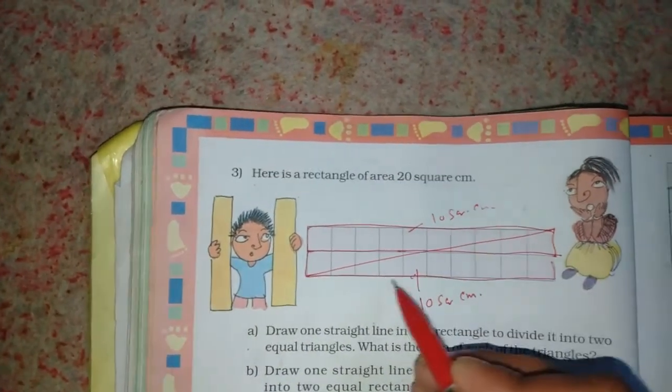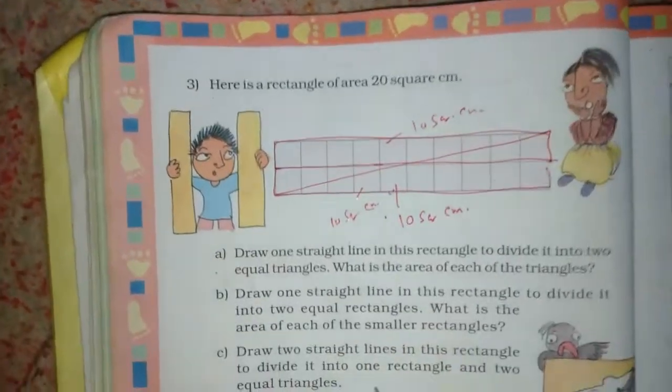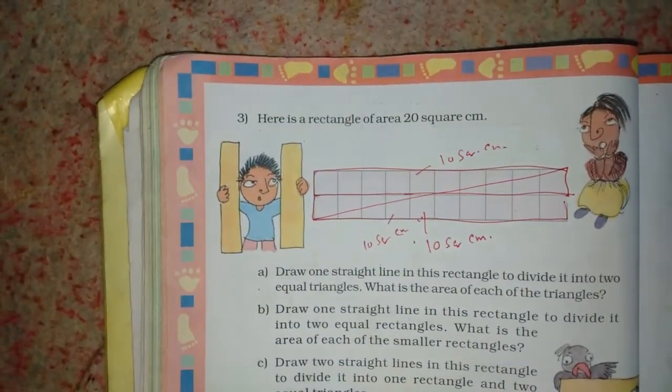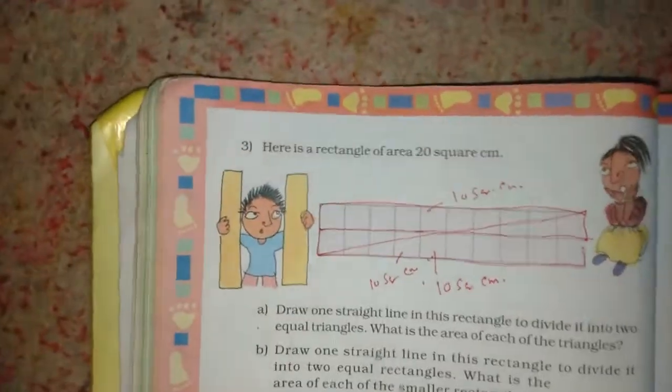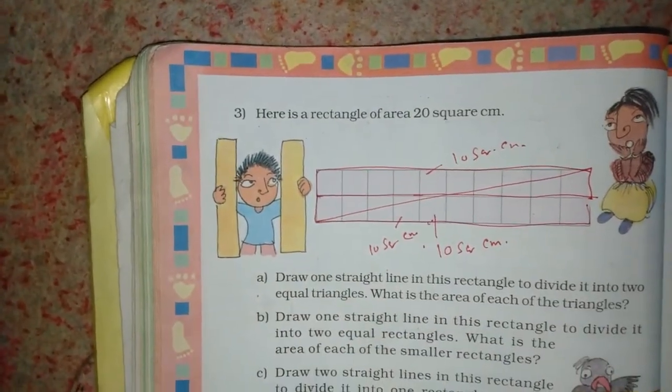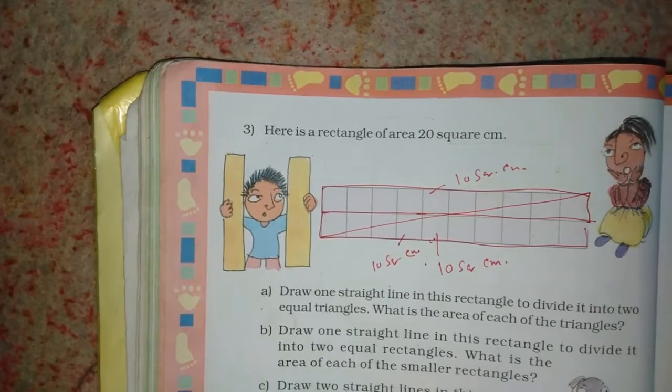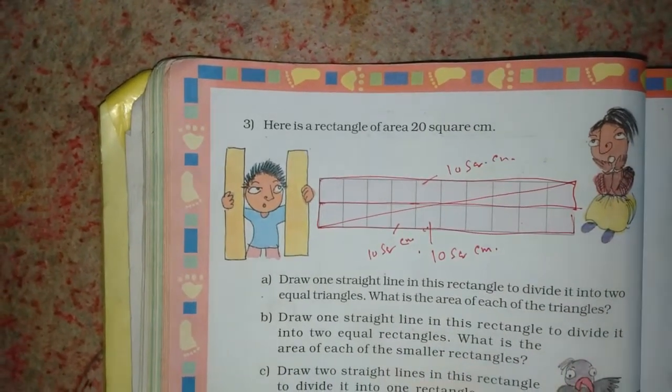Draw two straight lines in this rectangle to divide it into one rectangle and two equal triangles.